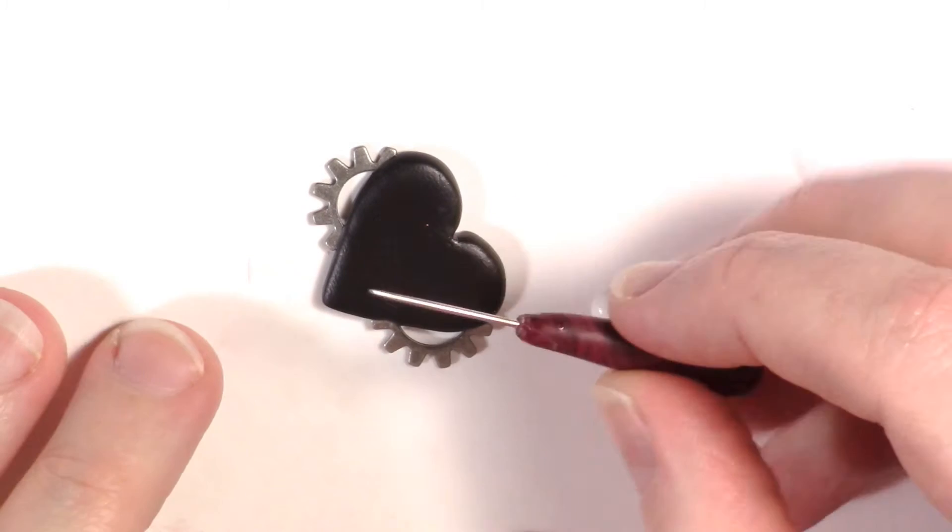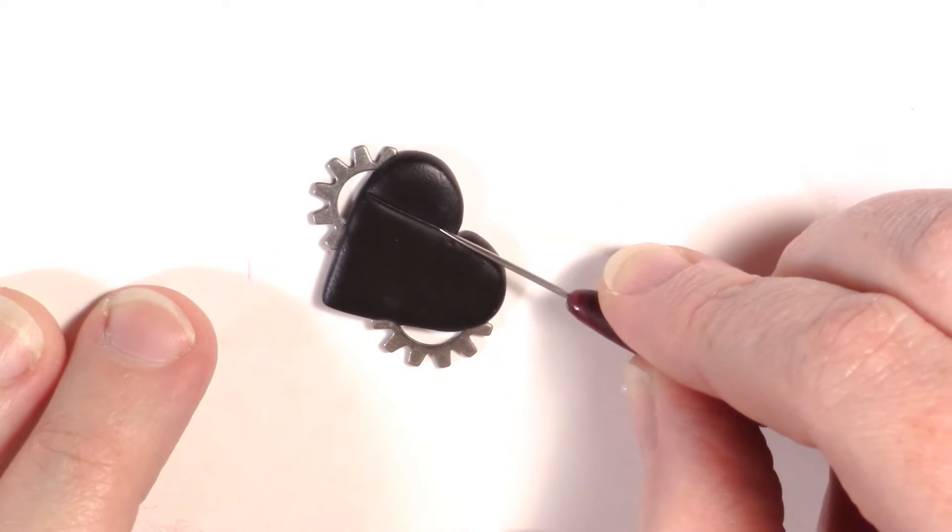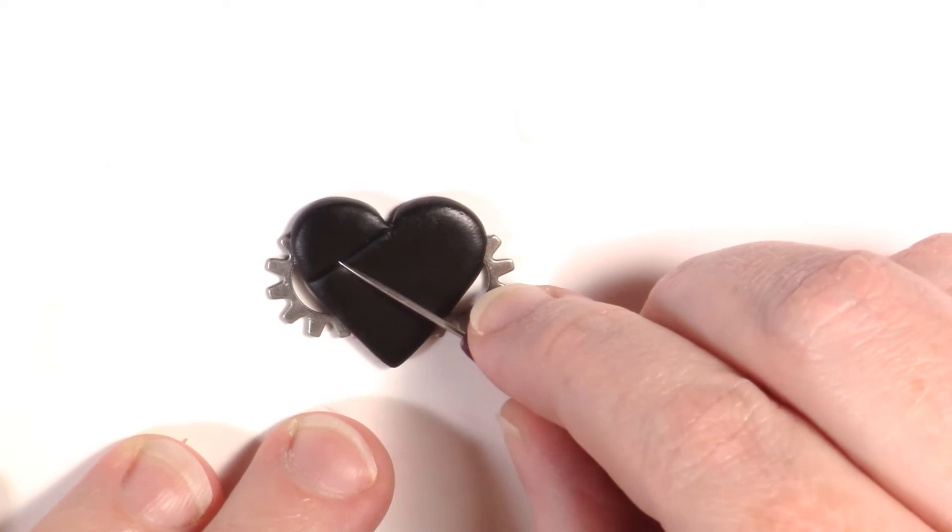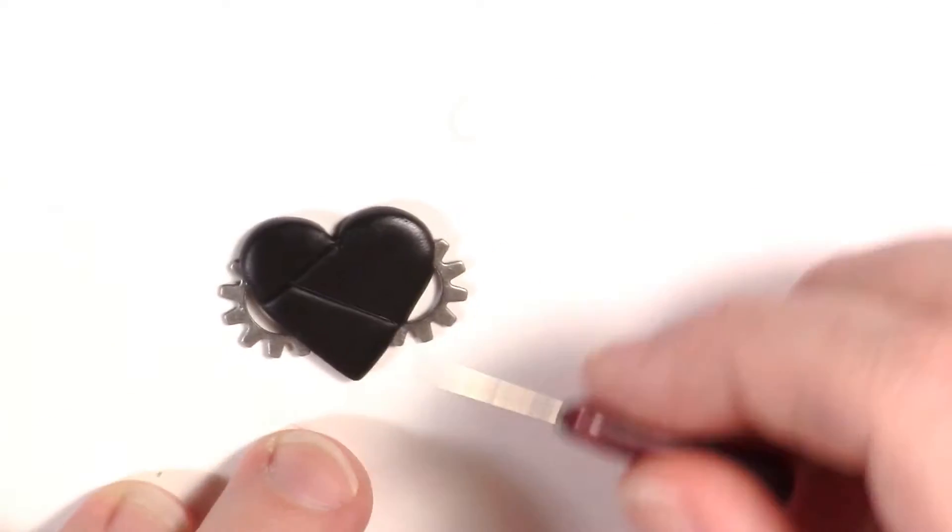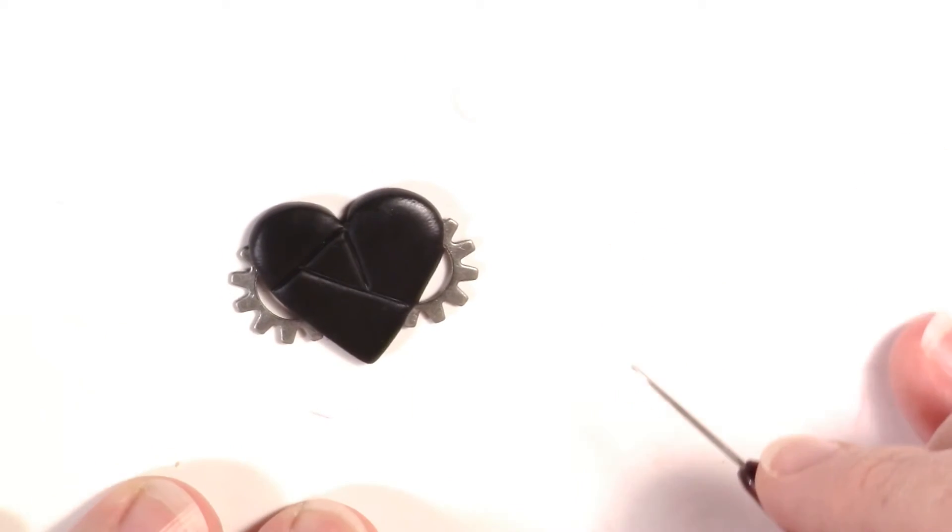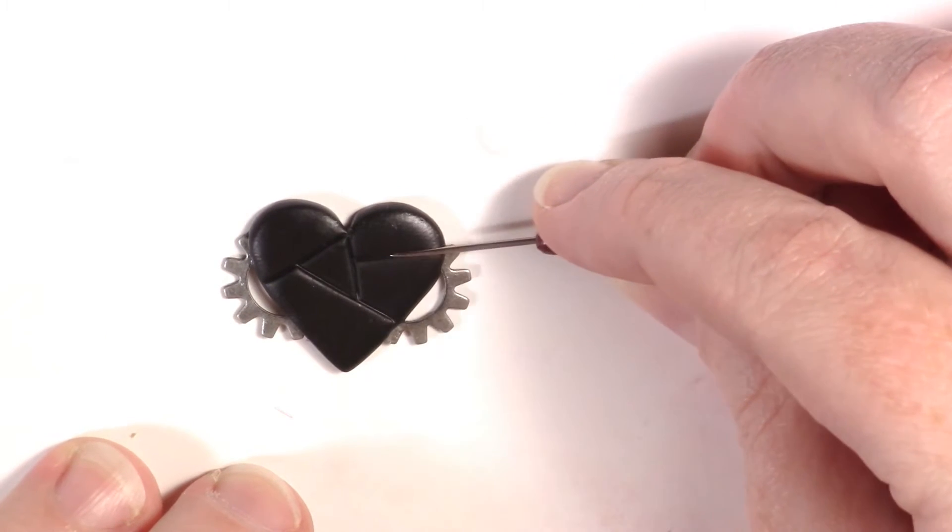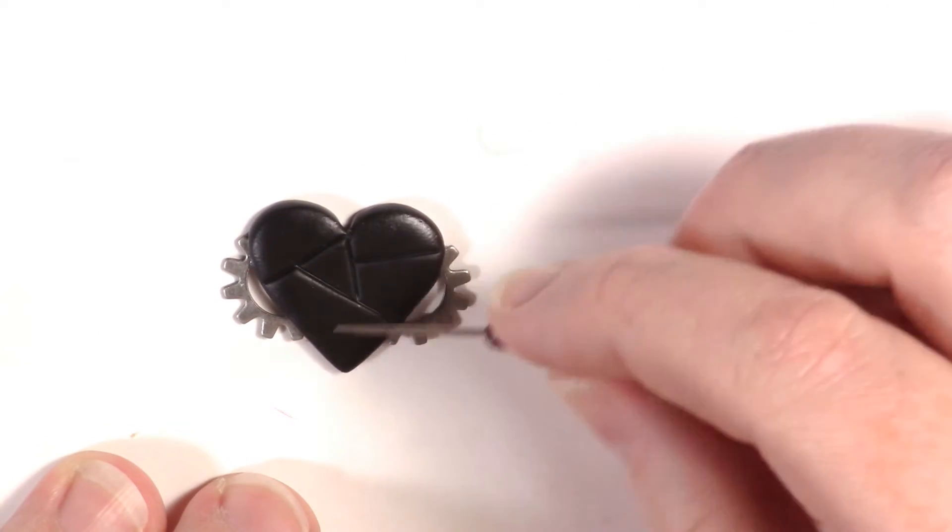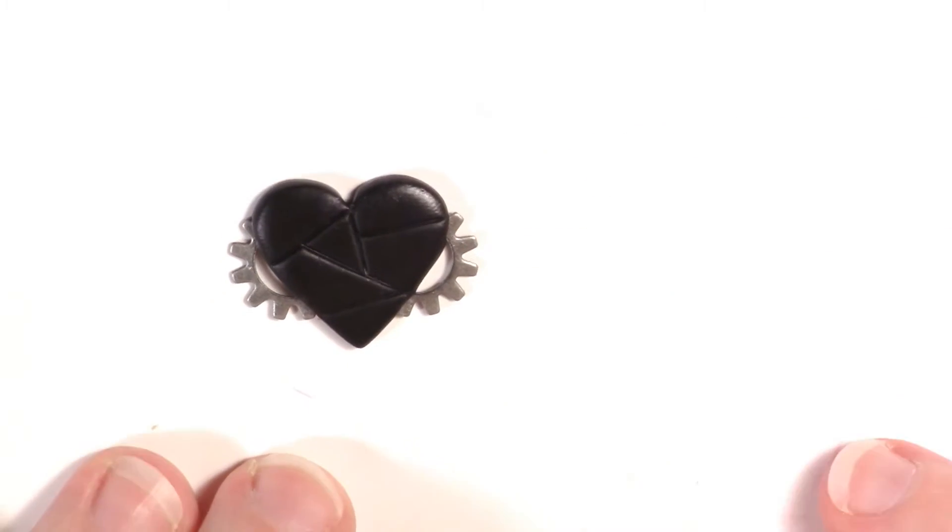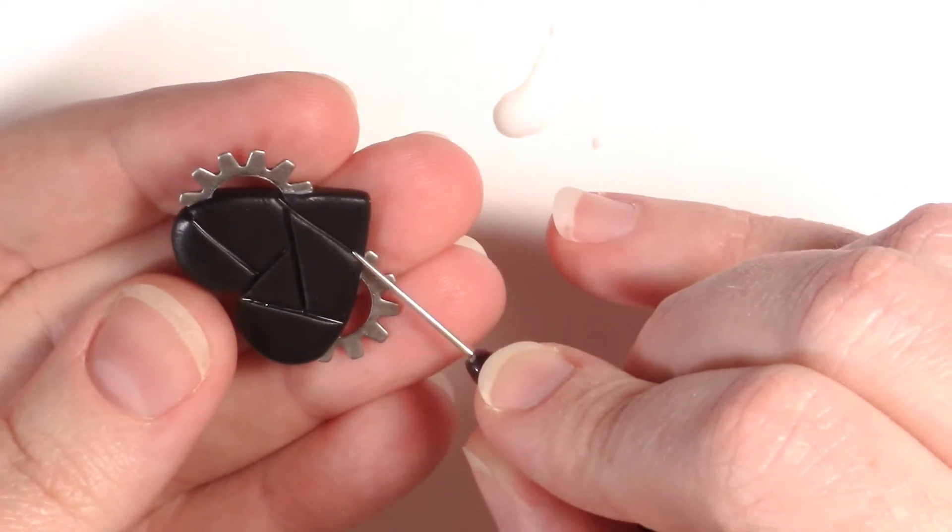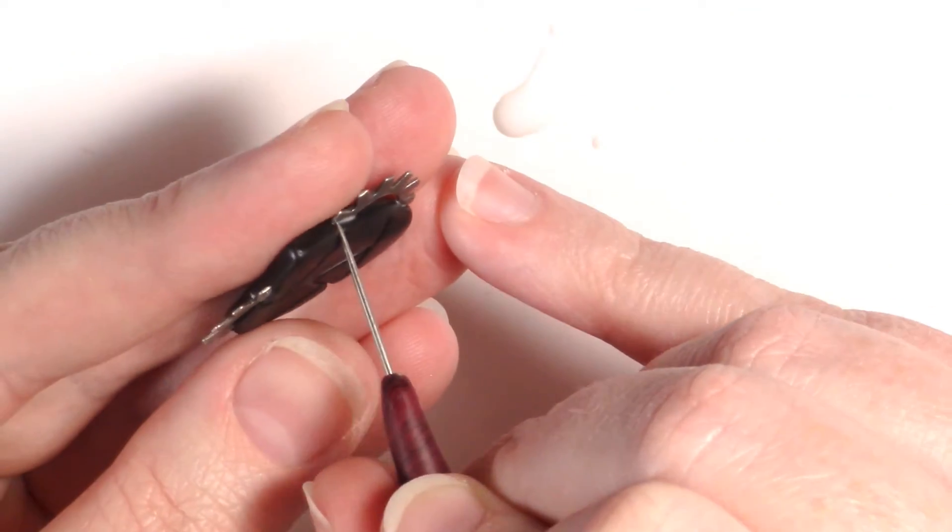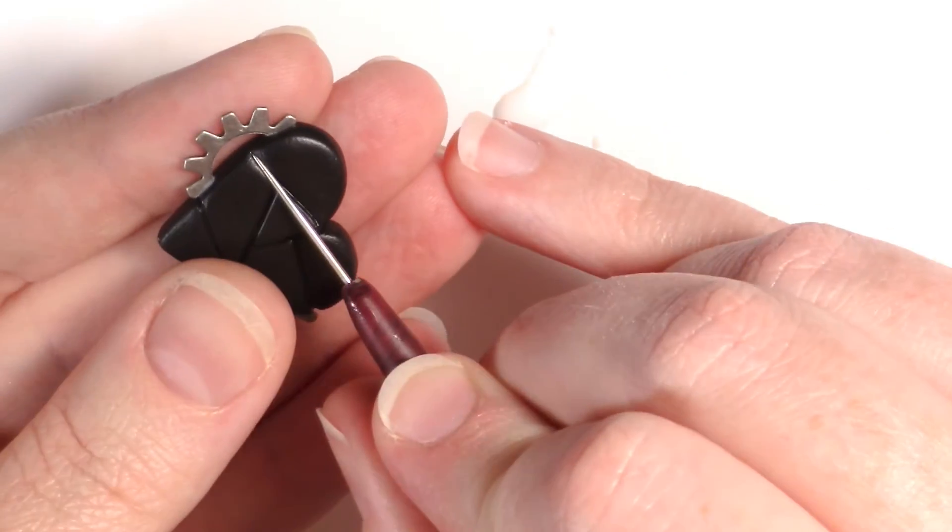Now, take your needle and start drawing lines. You can put them anywhere you want but make sure they are somewhat deep so you can see the space in between each section you made. You'll want to make sure you take your lines right down to the edge of the heart as well. This will help it look more like metal pieces put together.